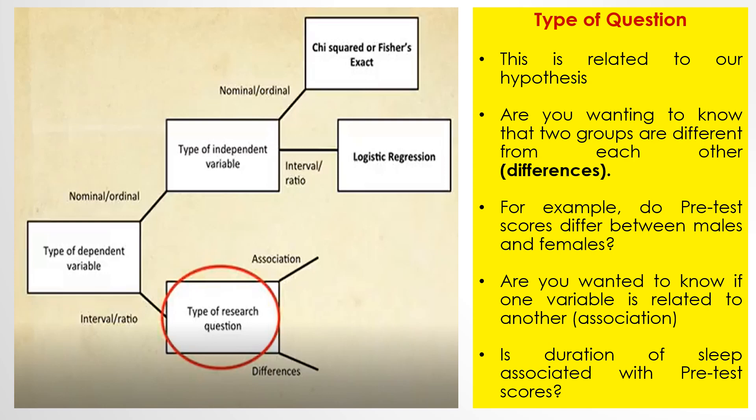If the dependent variable is interval or ratio, we proceed to ask what type of research question it is. We need to consider whether it is an association or a difference question, as this is related to our hypothesis. Are you wanting to know that groups are different from each other — for example, do pre-test scores differ between males and females? Or do you want to know if one variable is related to another — that is an association, such as whether duration of sleep is associated with pre-test score.